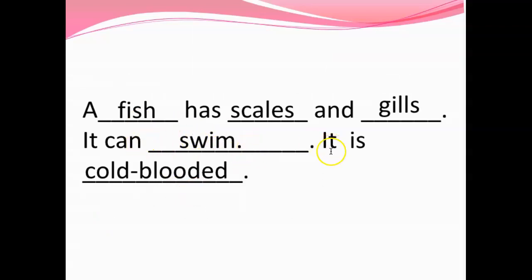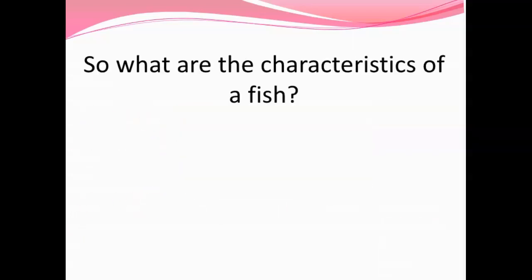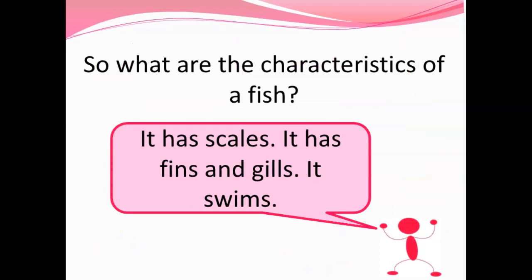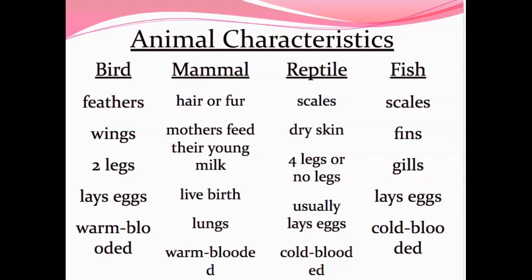So what are the characteristics of a fish? We found those by looking at our characteristic chart. Each of these is a category — bird, mammal, reptile, and fish — and below we have characteristics for that specific type of animal. The characteristics of a fish are that it has scales, fins and gills, it swims, it lays eggs, and it's cold-blooded. So we're going to sort animals into categories or groups based on their characteristics.